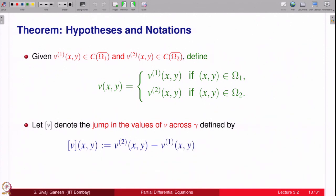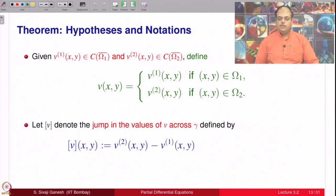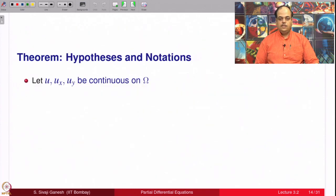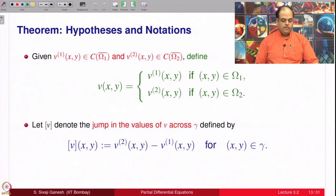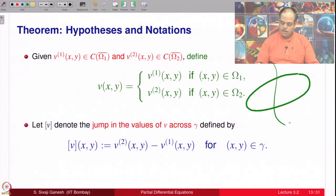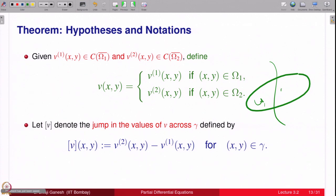Define a function V on omega that equals V_1 in omega_1 and V_2 in omega_2. Let the bracket notation [V] denote the jump in the values of V across gamma: at a point (x,y) on gamma, V_2(x,y) makes sense and V_1(x,y) makes sense since both are continuous up to the boundary, so we define [V] = V_2(x,y) minus V_1(x,y) at points of gamma.